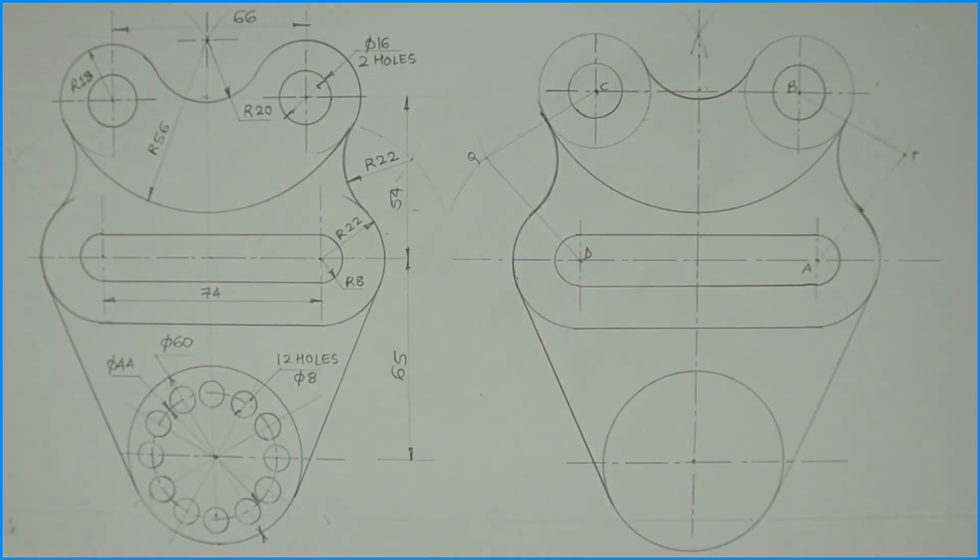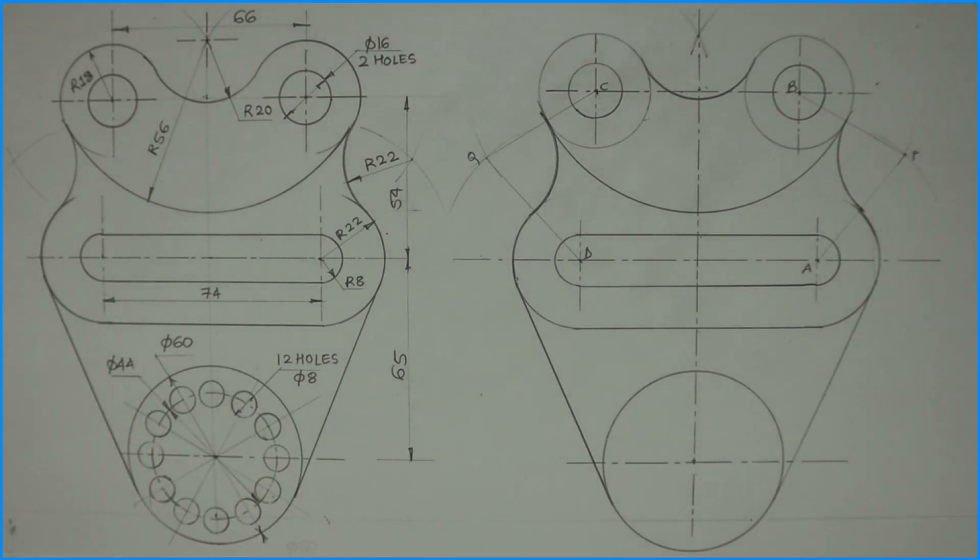Now we need to draw 12 circles. If you see, 12 circles of diameter 8 on diameter 44. So first you draw diameter 44.